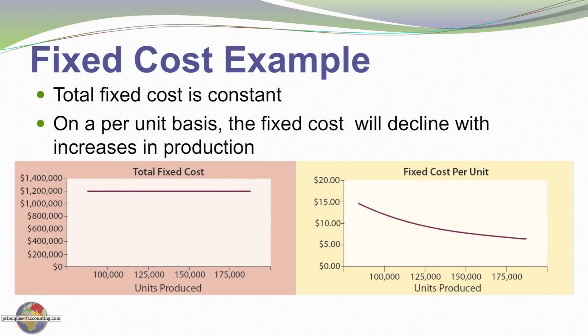Graphically, I've plotted on the left the total fixed cost — it's the same no matter the number of units produced. On the right, I've plotted fixed cost per unit, and you can see how it decreases with increases in production.